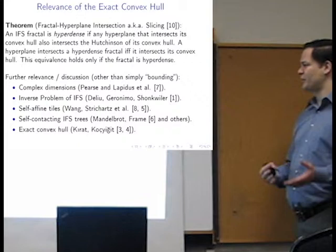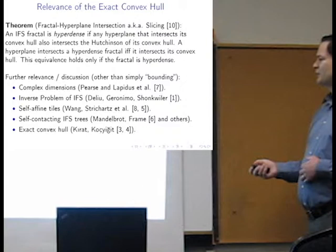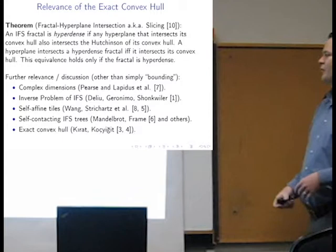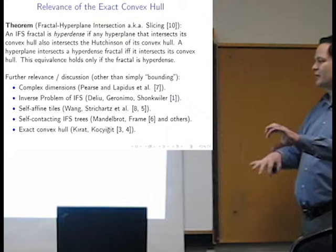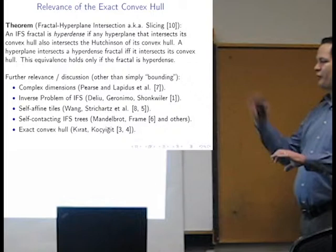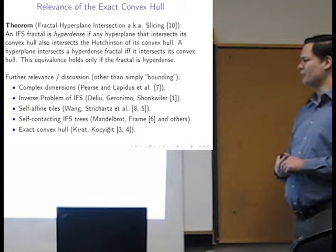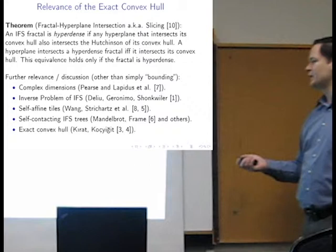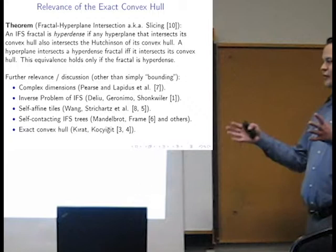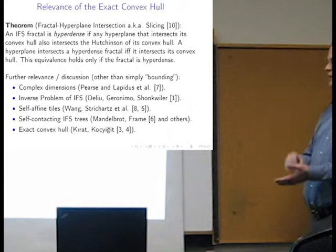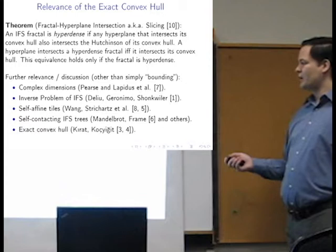So if we define hyperdense as a fractal for which, if you take the convex hull and you take first-level iterates, this implication has to hold that any hyperplane that intersects the convex hull, meaning the relevant hyperplanes, would also need to intersect the iterates as well. So first-level iterates. And this is for any direction or any hyperplane, right?